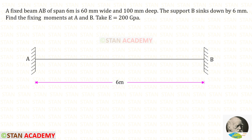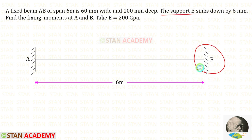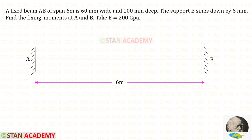Hello everyone. Today we are going to analyze this fixed beam. The span of the beam is given as 6 meters. In this beam there is no load. The support B sinks by 6 millimeters. The width of the beam is given as 60 millimeters and the depth of the beam is given as 100 millimeters. The Young's modulus E is given as 200 gigapascal.